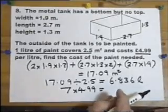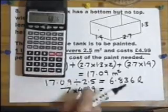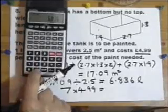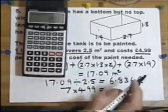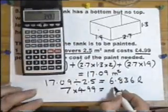So in fact, using the answer button this time is going to make you go wrong. I actually need to type in seven liters: seven multiply by £4.99. Thirty-four pounds ninety-three.